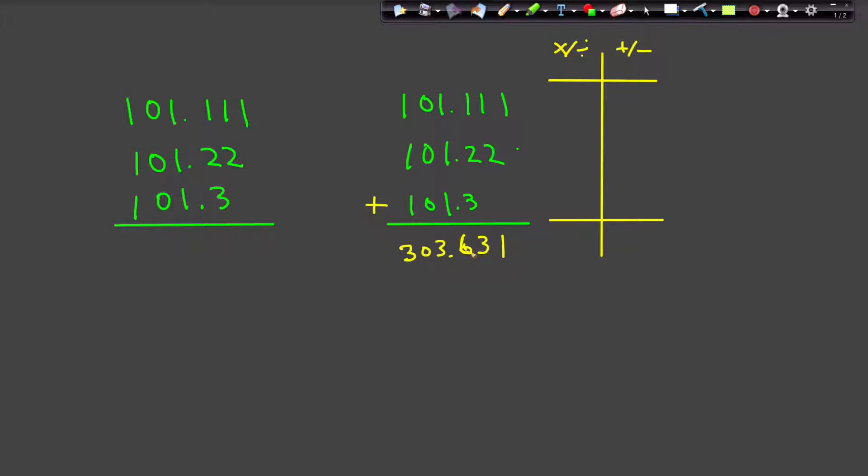Now the answer is, how precise should my number be? Should I report it to 303? Should I keep all six of these digits? What should I do? Well, the key lies in the fact that your mathematical operation is addition which falls under the addition subtraction rule.